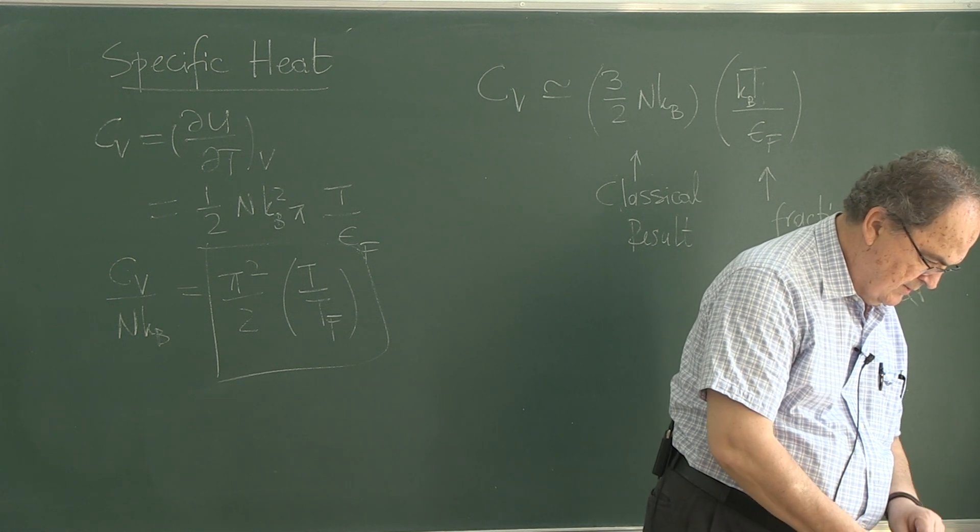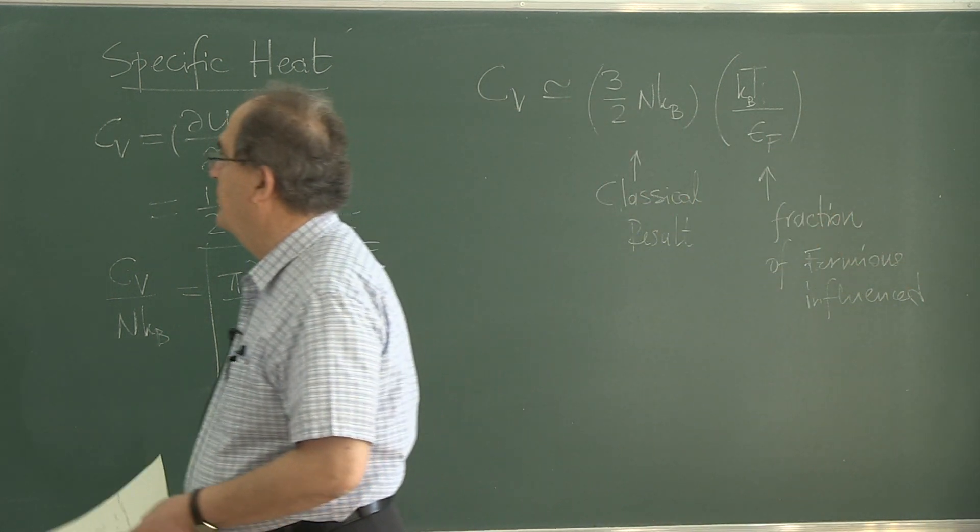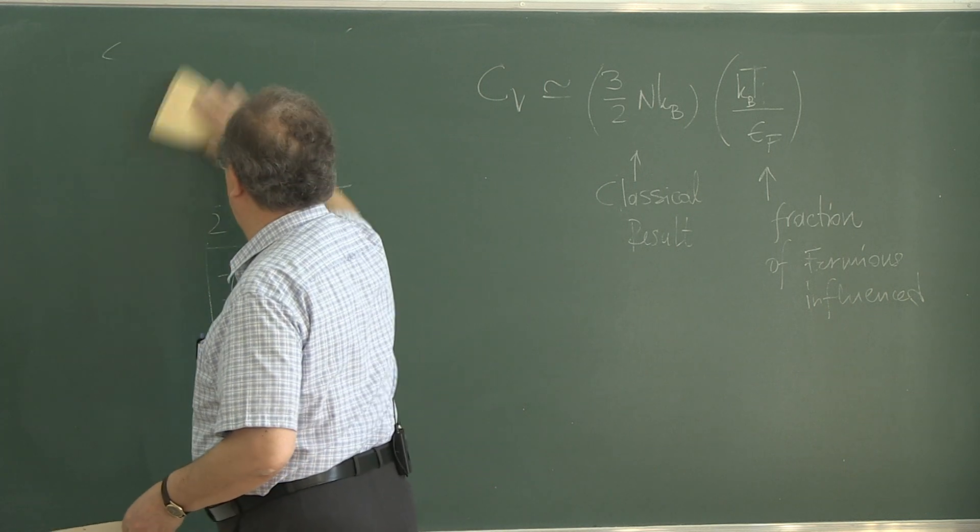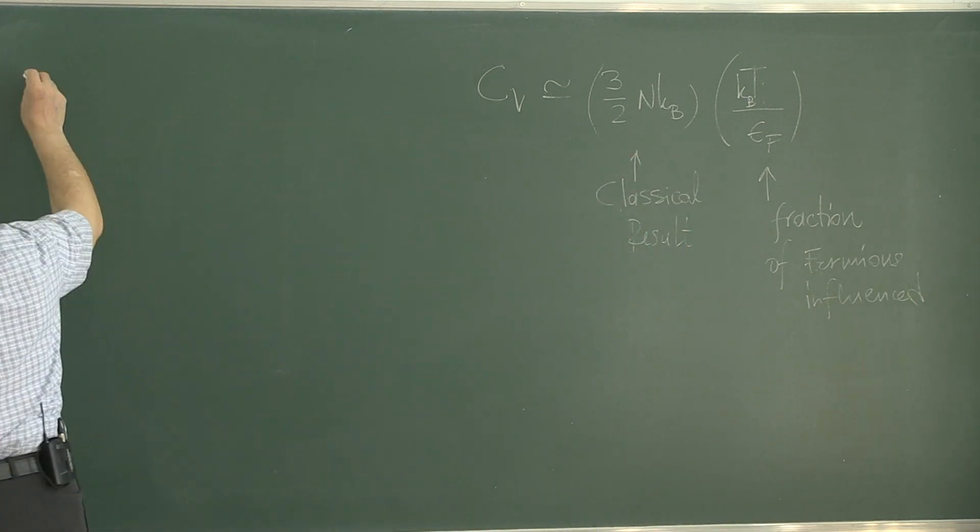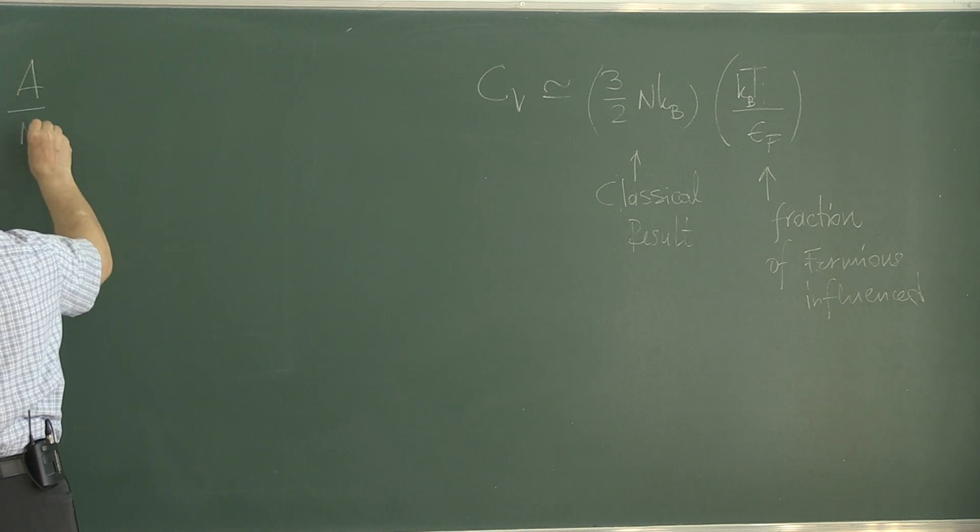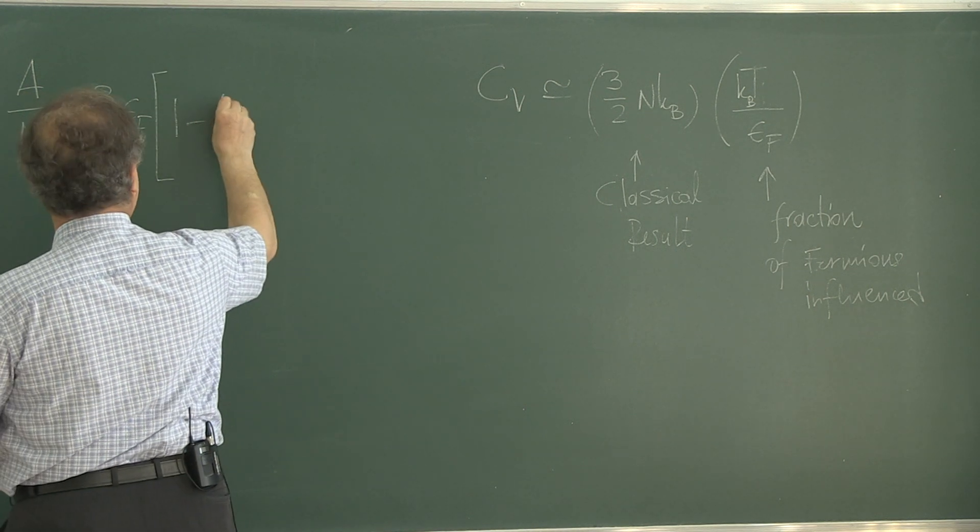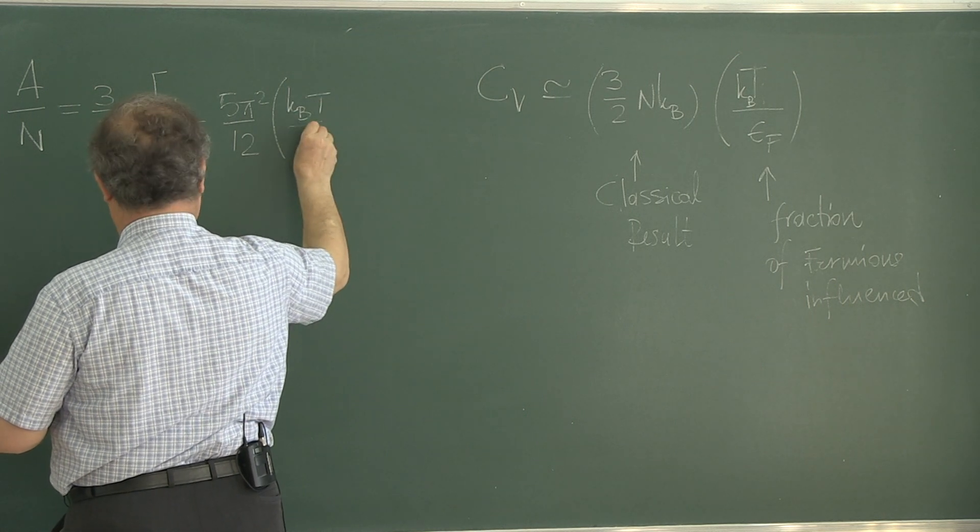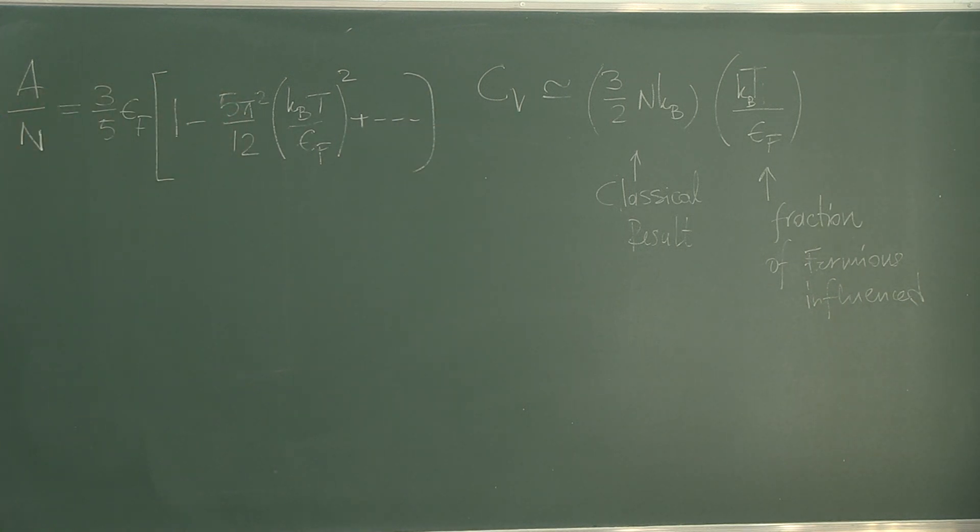Let's keep three more things. Oh, everything is coming out nicely. Let's continue with the Helmholtz free energy per particle. 3 over 5 eF, 1 minus 5 pi squared over 12, T over TF squared. That is Helmholtz free energy. And here is entropy.